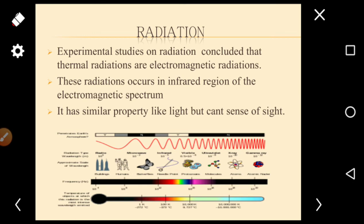Experimental studies on radiation conclude that thermal radiations are electromagnetic radiations occurring in the infrared region of the electromagnetic spectrum. The radiation is similar in properties to light but we cannot sense it visually - when light falls on an object it makes us sense it, but when radiation falls on an object we cannot see it.